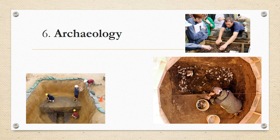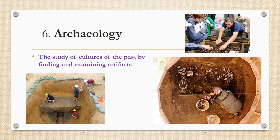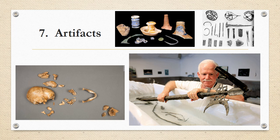Number six is archaeology, and these are all pictures from the Jamestown Rediscovery website. Archaeology is the study of cultures of the past by finding and examining artifacts. On the left-hand side they are having to dig very deep in the ground in order to get to the layer that might have artifacts. On the other side, this man is digging out a well that they found in Jamestown. And in the top you can see they're sifting through the dirt in order to find little pieces of pottery, shell, or bones that might give clues about the Jamestown settlement in the past.